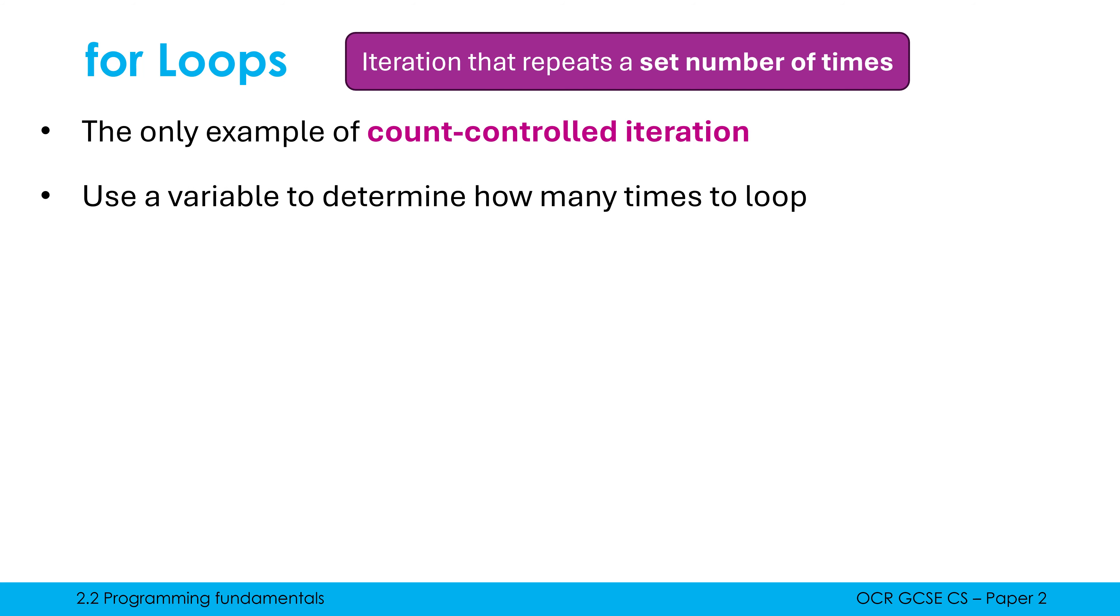A for loop has a variable which determines how many times it will loop. Here is the syntax of a for loop in OCR exam reference language. You can use Python if you want to, you can use any language you want to, as long as we can see the same sort of elements to it. So what do we have here?